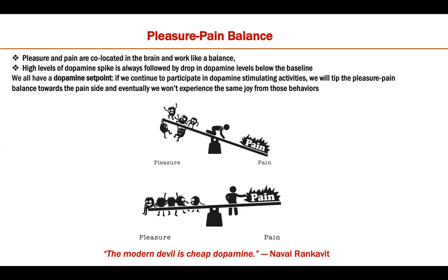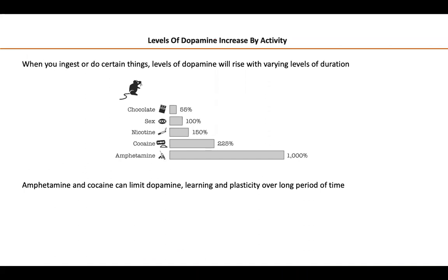This leads to addiction, which leads to depression, because we lose the urge or desire to pursue even small things. To illustrate the scale: chocolate increases dopamine levels by 55%, sexual pleasure by 100%, nicotine 150%, cocaine 225%, and amphetamine by 1000%. The higher the dopamine spike a drug causes, the greater the pain response in the same magnitude and the stronger the addiction.